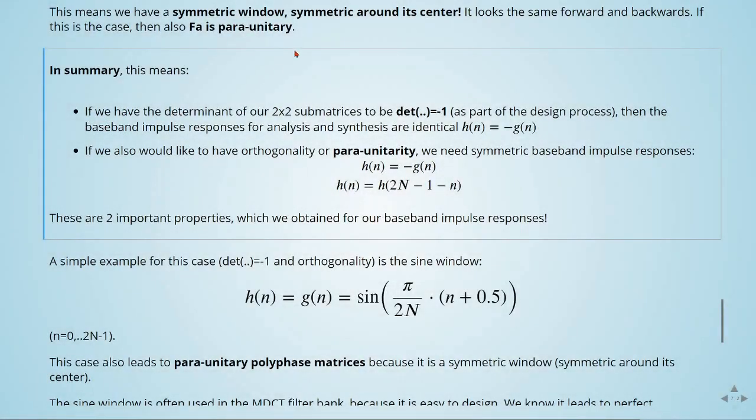To summarize, if we have the determinant of our 2 by 2 sub-matrices to be equal to minus 1 as part of the design process, then the baseband impulse responses for analysis and synthesis are identical with this sign. So h is equal to minus g.